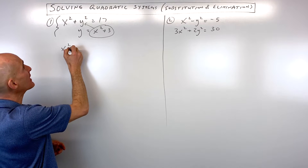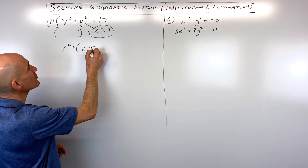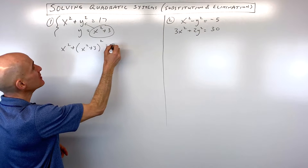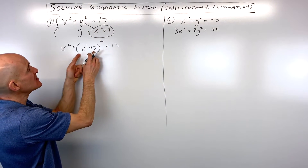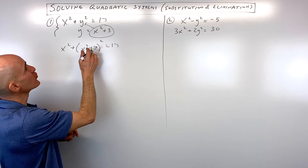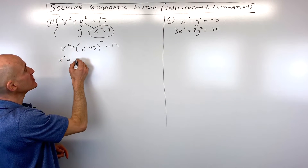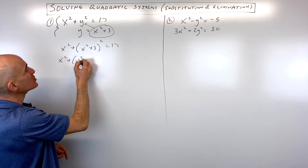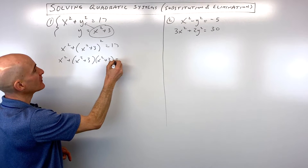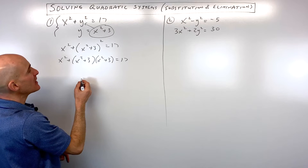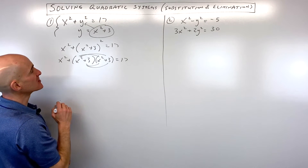We've got x squared plus the quantity x squared plus 3, squared, equals 17. Remember when you do a substitution, you want to put it in parentheses and treat it like a group — so it's this quantity squared. Now we're going to FOIL this out. When you square something, it's like having two of that quantity, so we'll use the FOIL method, or distribute twice.